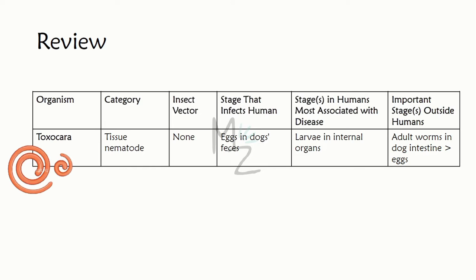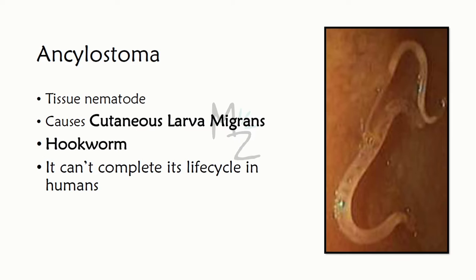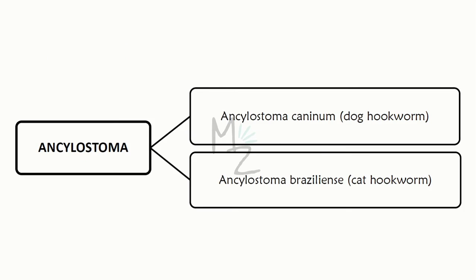The next nematode is Ancylostoma (also pronounced Ankylostoma). It is a tissue nematode responsible for causing Cutaneous Larva Migrans (CLM). It is a hookworm that cannot complete its life cycle in humans. It is classified into two: Ancylostoma caninum (dog hookworm) and Ancylostoma braziliense (cat hookworm).